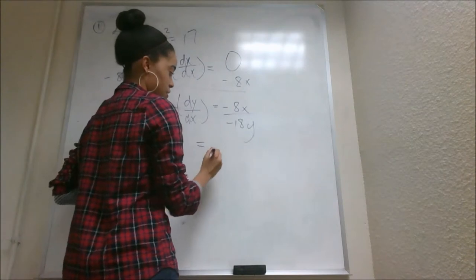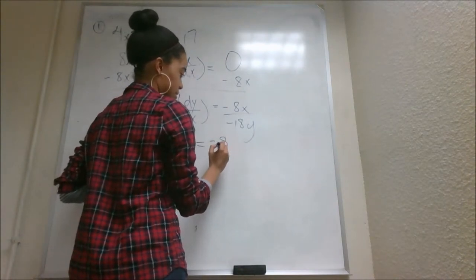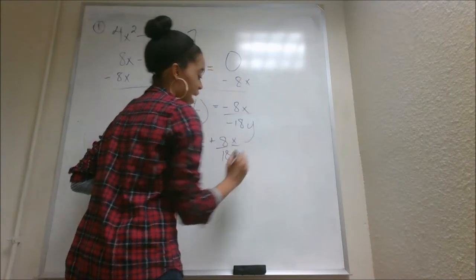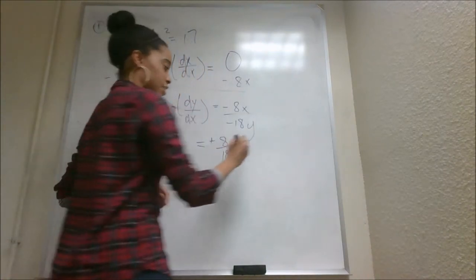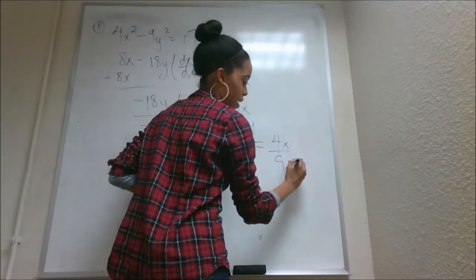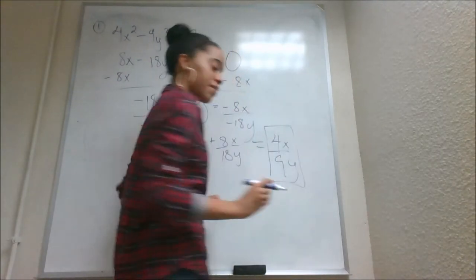The negatives cancel each other out. That leaves you with 8 over 18xy. And you can actually further simplify this into 4 over 9xy. And that is your derivative.